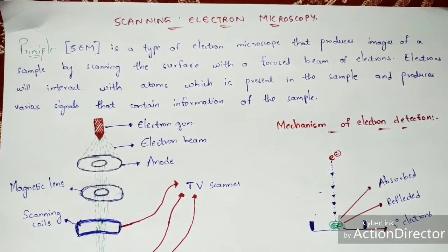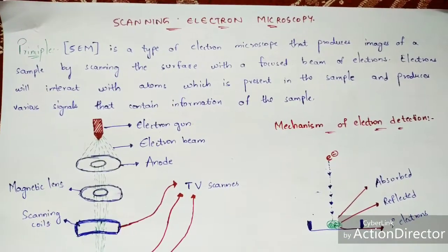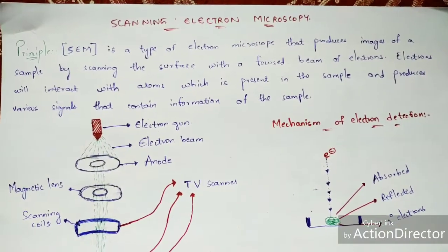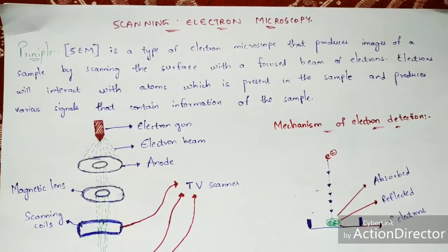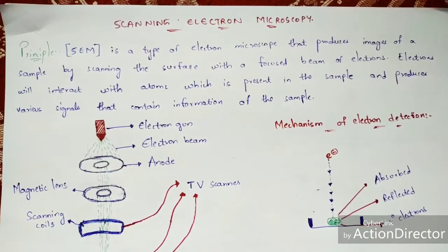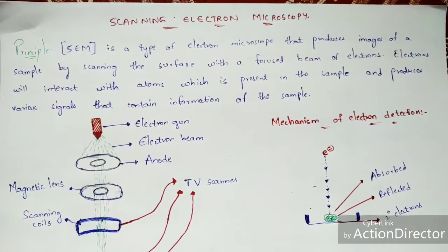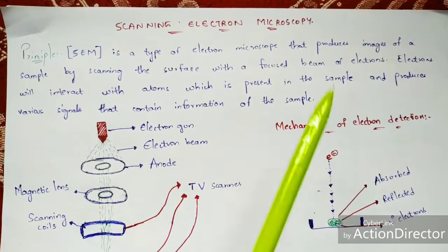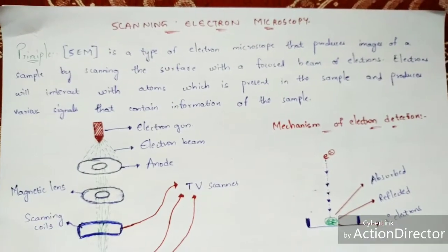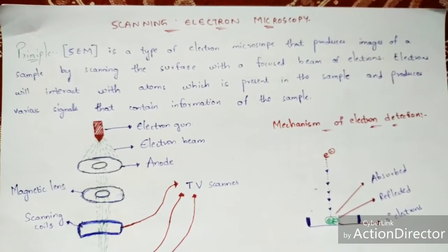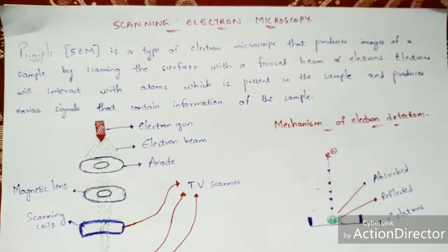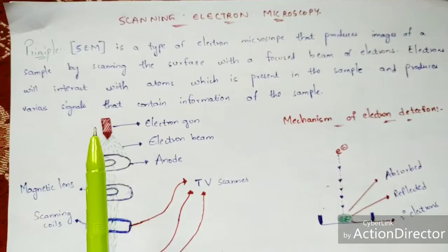In normal previous types of microscopes, as I have explained before — links will be given in the description box — in that type of microscope, a light source is used. The main function of the light source is the production of light in the form of photons, so that light falls upon the specimen, and with the help of the objective lens and the ocular lens, we can easily see that image.